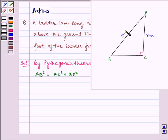AB is 10, so we write here 10 square is equal to AC square. AC is unknown, plus BC is 8 square.